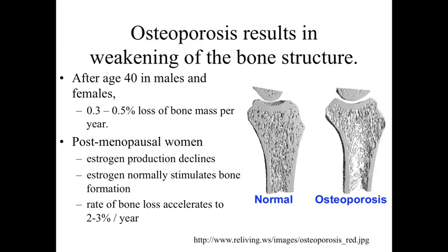A good example of this involves the control mechanisms present within the body. Estrogen, under normal circumstances, is going to be stimulating bone formation. But in postmenopausal women, we see a decrease in estrogen production and estrogen levels within the body. With that decrease, we're going to see less stimulation of bone formation, causing a natural shift toward more bone resorption. So instead of a 0.3 to 0.5 percent loss of bone mass per year, we can see bone loss accelerating to anywhere from 2 to 3 percent a year, because we're shifting that balance between bone resorption and bone deposition.